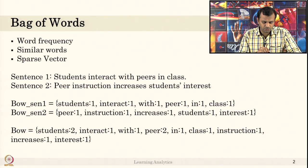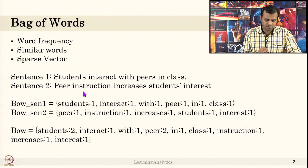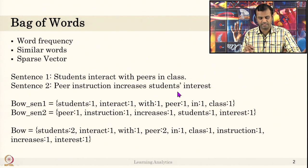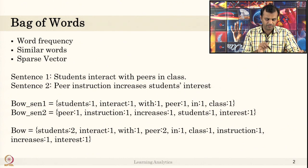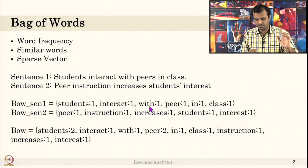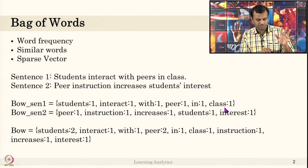Let us look at what bag of words means in detail. Sentence one says: 'Students interact with peers in class.' For the bag of words of sentence one, the word 'student' occurred one time, 'interact' occurred once, 'with' occurred once, 'peer' occurred once, 'in' occurred once, 'class' occurred once. That is the bag of words of sentence one.